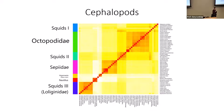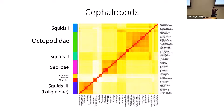A holobaramin is defined as the complete, exhaustive list of species in a created kind — the full roster of all species that exist within a baramin. The whole baramin.